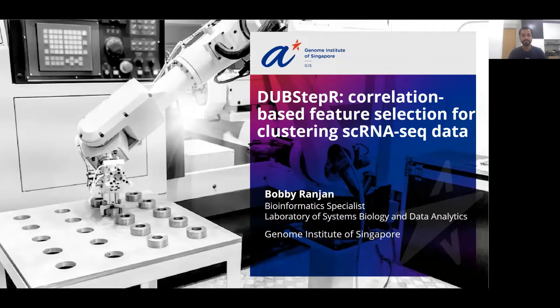Hello everyone, my name is Bobby and I work at the Genome Institute of Singapore. I want to thank the organizers for giving me the opportunity to present Dubstepper, a correlation-based feature selection method for clustering single-cell RNA sequencing data.